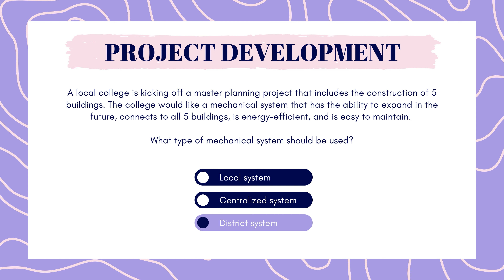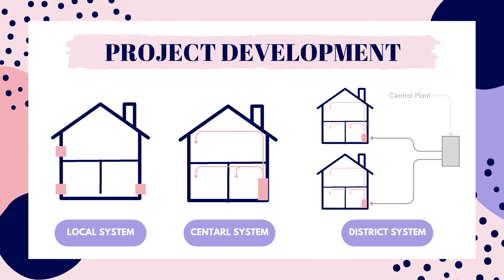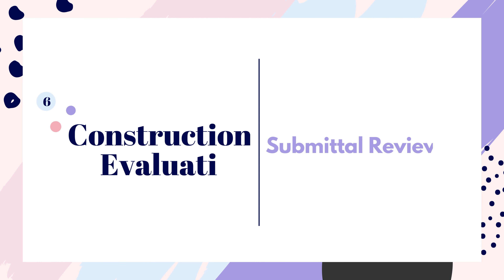The correct answer is district system. A district system includes a central plant where heating and cooling energy are generated and distributed, housing equipment such as boilers, chillers, heat exchangers, and pumps. This system is commonly used in urban areas and large campuses. District systems optimize energy use, reduce energy costs, have the ability to connect to future buildings, and are easier to maintain since system components are located in one place. Local systems only serve one room or zone. Centralized systems are cost effective in large buildings and can be expanded relatively easily, but are not the best option for servicing five separate buildings.